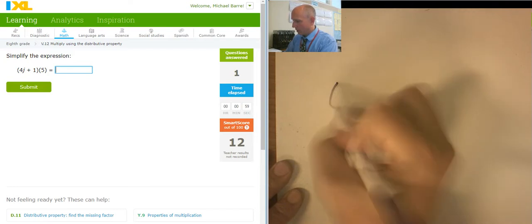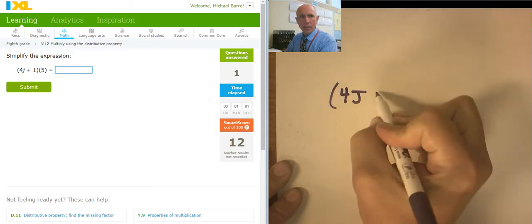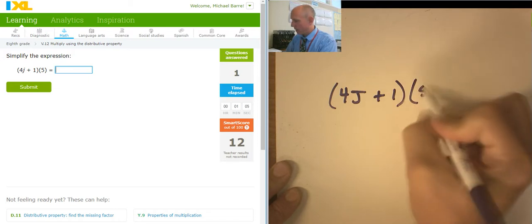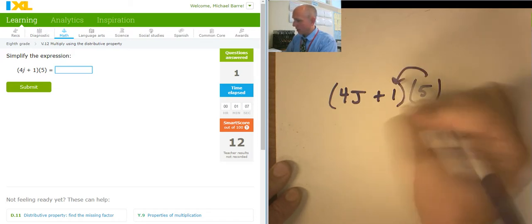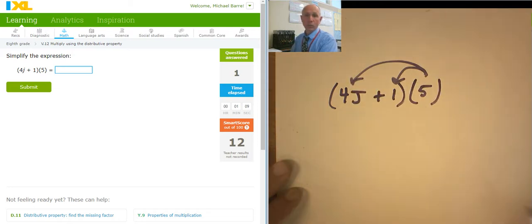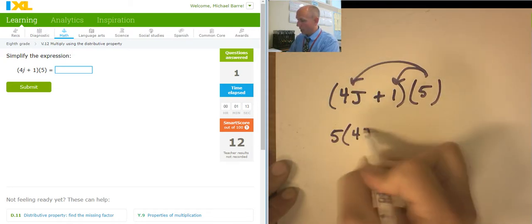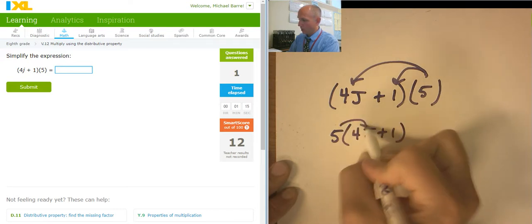This one, I'm looking at (4J+1) times 5. And now I'm just looking at a backwards distribution, or you could have written it as 5(4J+1) and then do a forward jump either way.